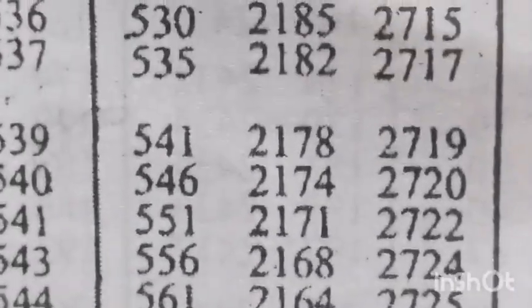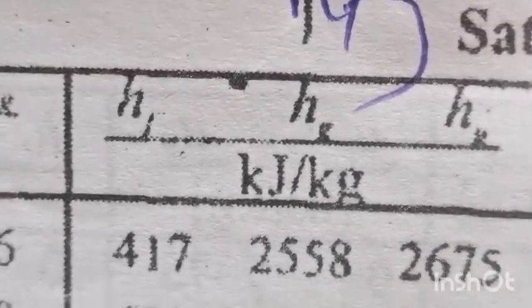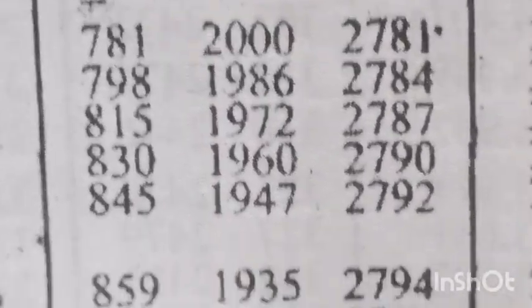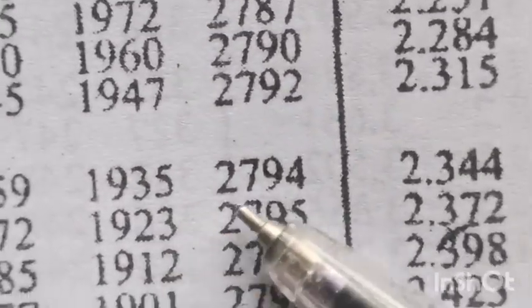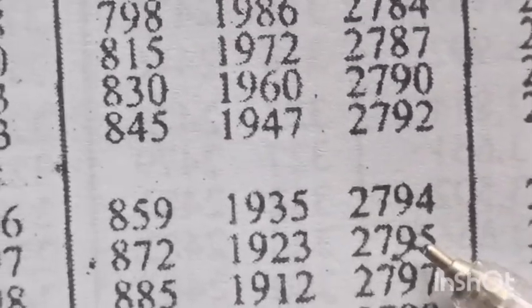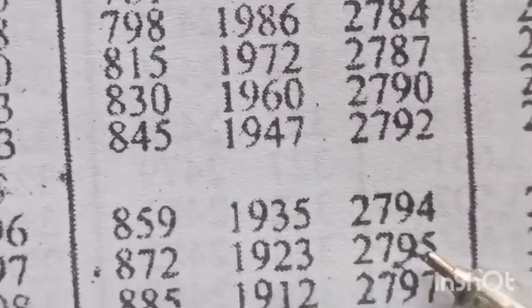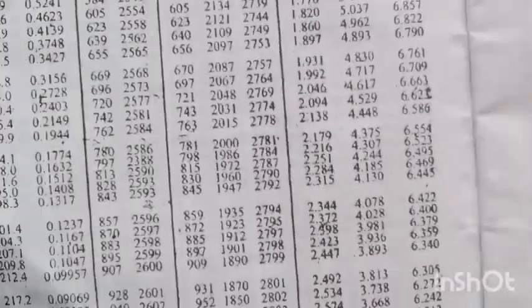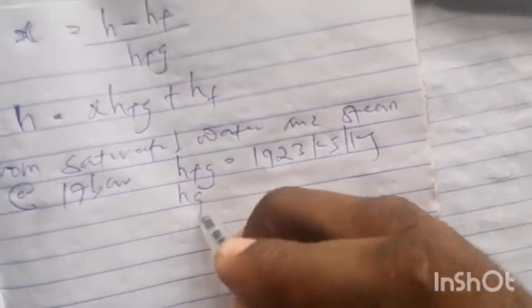At 17 bar, hfg is 1923 kilojoules per kilogram and hg is 2795 kilojoules per kilogram.